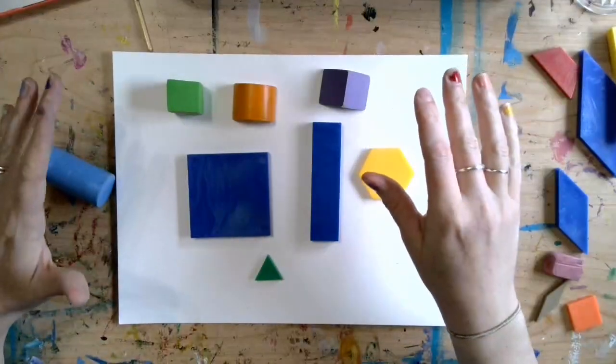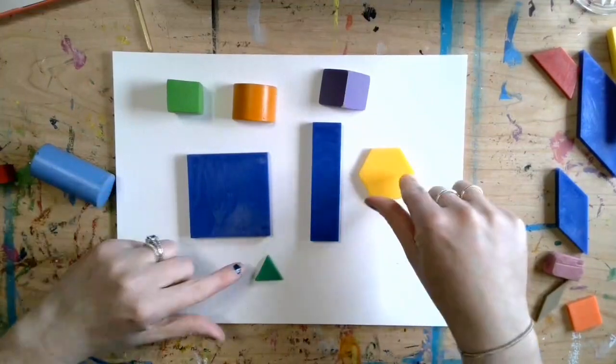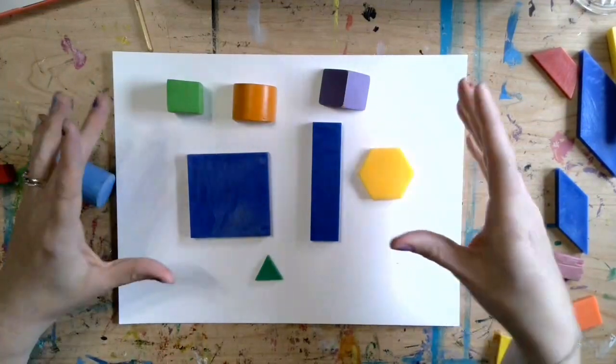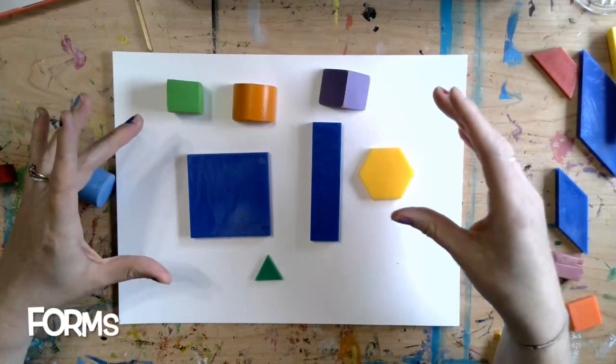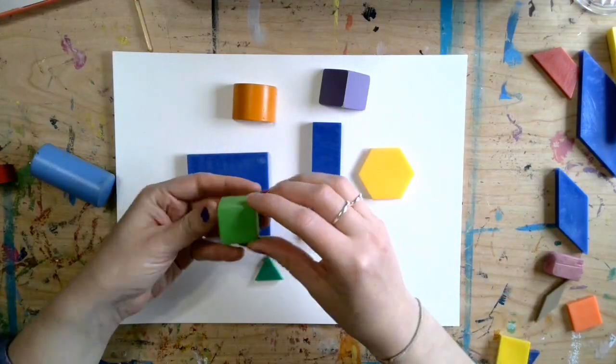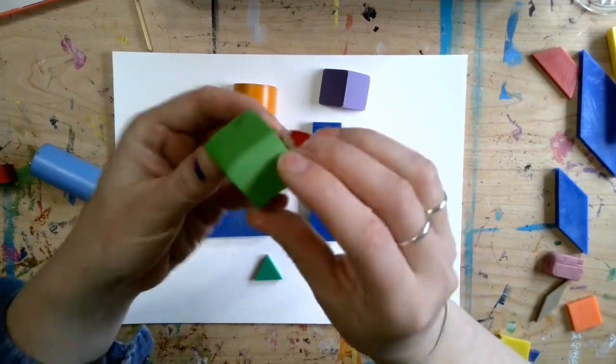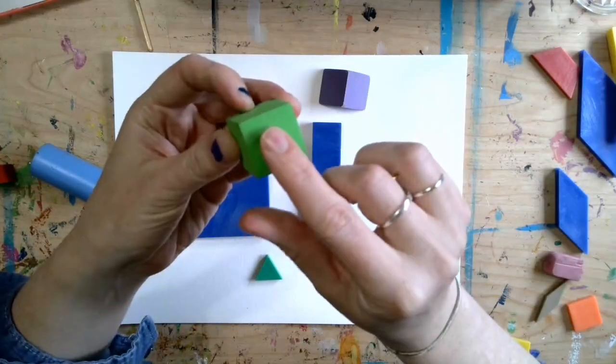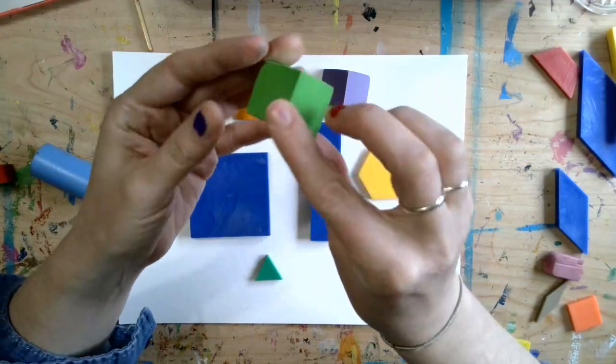So gather up your supplies and let's talk about how we can create forms. Today we're going to take our knowledge of geometric shapes and use that to learn how to draw forms. Now a form is another one of our elements of art. A form is a three-dimensional object which means that we can see it from all sides: top, bottom, left, right.